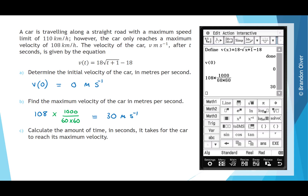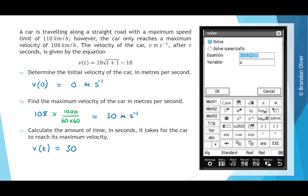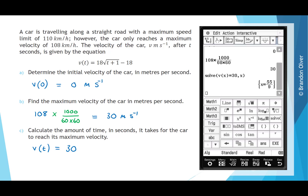For part C, we're asked to calculate the amount of time in seconds it takes for the car to reach its maximum velocity. That means we need to solve v(t) = 30. On the calculator, we type v(x) = 30, then highlight Interactive, Equation/Inequality, Solve, solving for x. Pressing OK gives x = 55/9. Therefore, T = 55/9 seconds.